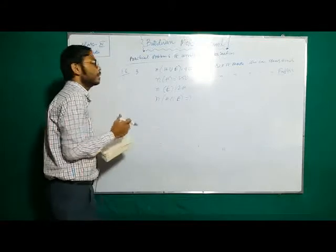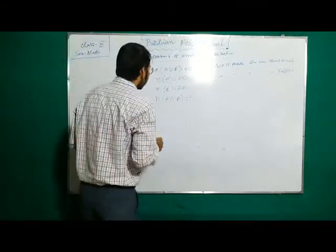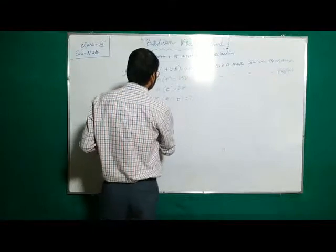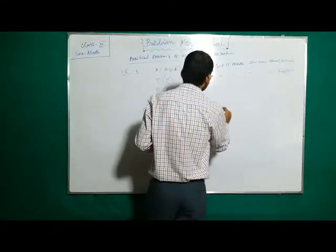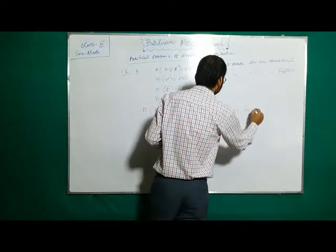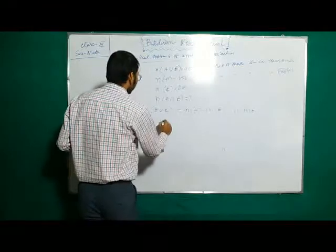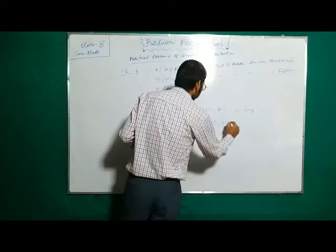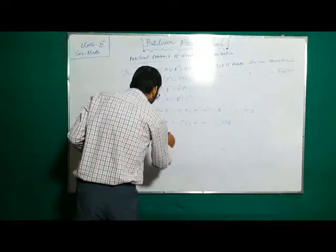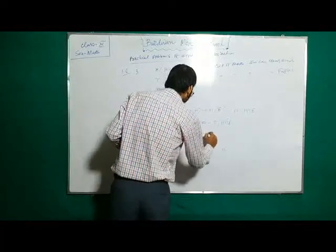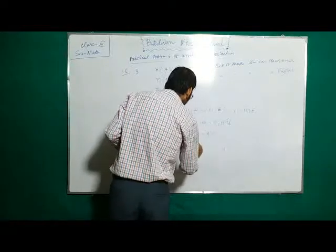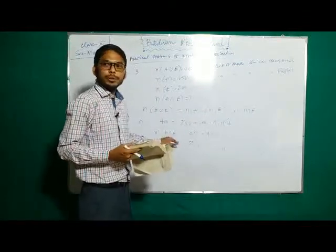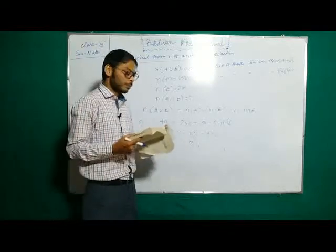This is a practical problem of union and intersection. Using the formula proved earlier: n of H union E equals n of H plus n of E minus n of H intersection E. Substituting values: 400 equals 250 plus 200 minus n of H intersection E. Therefore, n of H intersection E equals 450 minus 400, which gives 50. So 50 people can speak both English and Hindi.